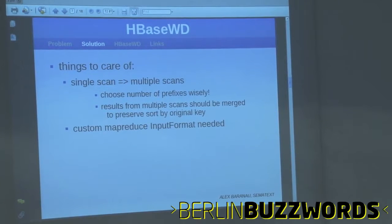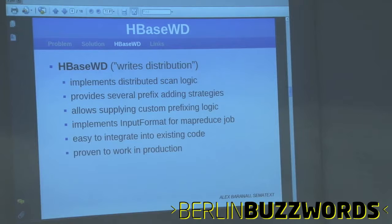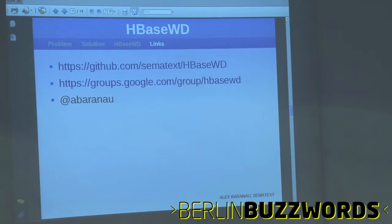A custom MapReduce input format is also needed, because the default one only accepts a single scan. This is where HBSWD comes in. It is an open source project that implements all these things for you. It is proven in production — those screenshots were taken from one of our systems, and it really helped us. The highlighted code is the only thing you need to add, and it uses the same HBase API as before.